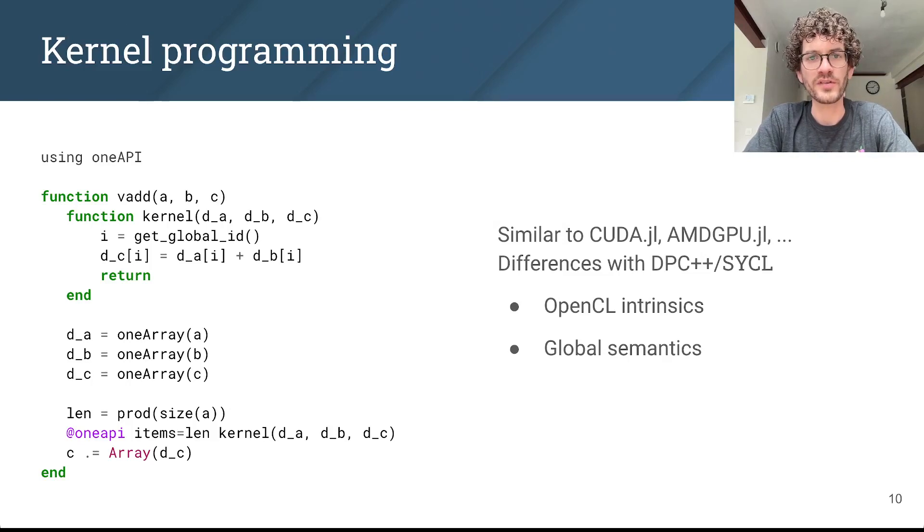We also use global semantics. For example, you don't have to create your own command queue, but we'll automatically use a queue that's bound to the current Julia task. And instead of using a parallel abstraction, we're launching a scalar kernel using the @oneAPI macro.